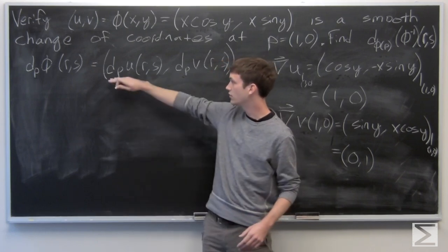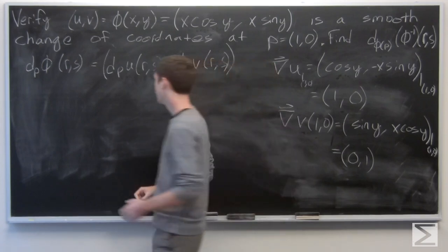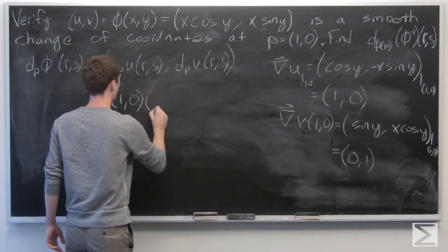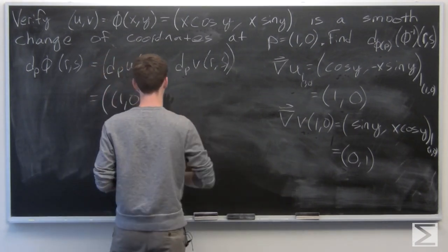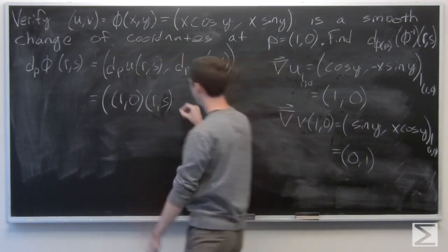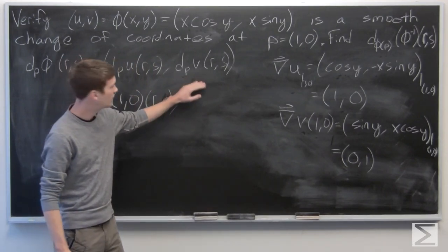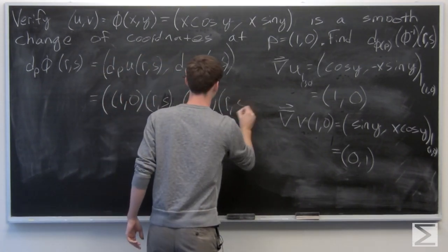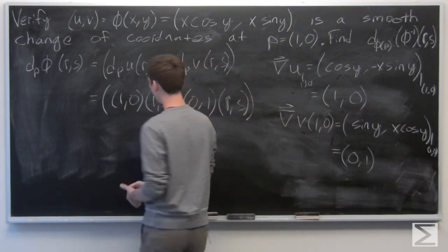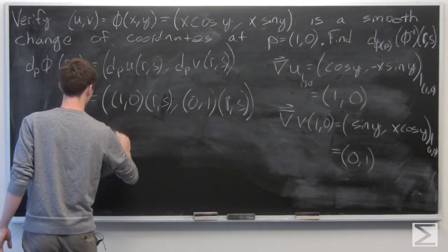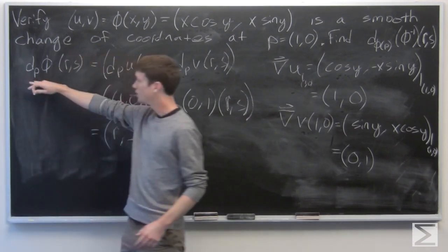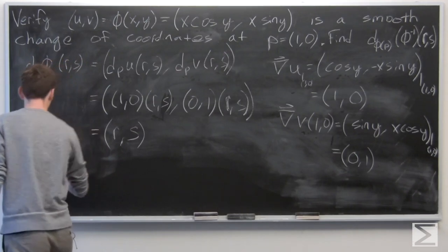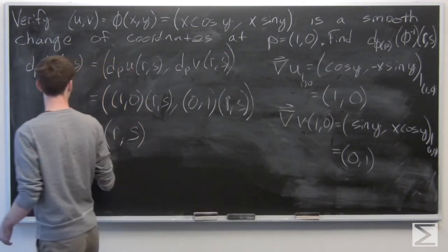The total derivative of u at p with respect to (r, s) is the gradient vector of u at p, which is (1, 0), dotted with (r, s). Similarly, the gradient vector of v at p, which is (0, 1), dotted with (r, s). Computing the dot products, the total derivative of phi at p with respect to (r, s) is just (r, s). So it is clearly a bijection, and phi is a smooth change of coordinates locally.